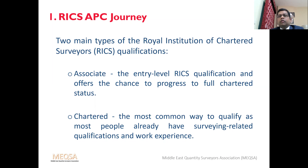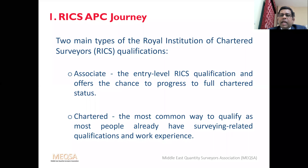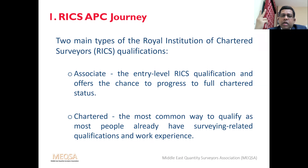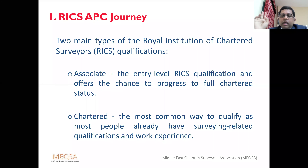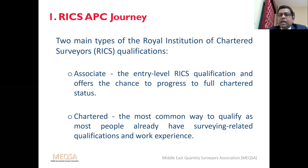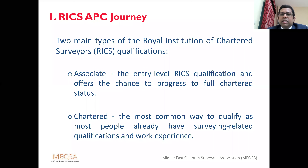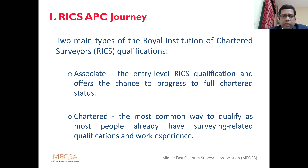Associate RICS is the entry-level qualification through which you can slowly progress to full chartered status. Normally people won't go for this — they would directly go for chartered status or MRICS. What I suggest is we concentrate on MRICS, because most of you want to become a full member of RICS or a chartered surveyor. These are the eligibility requirements for the APC route.